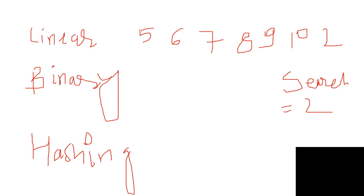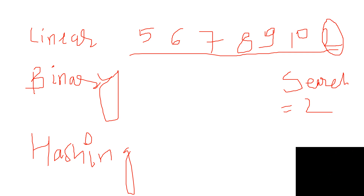In linear search, we want to search a given element. Suppose the array is 5, 6, 7, 8, 9, 10, and 12 — and we want to search element 2. We need to check one by one: is 2 equal to 5? No. Then we check the next, linearly. Since 2 is at the last position, we check 8 times — one for each element — so the time complexity of linear search is O(n).